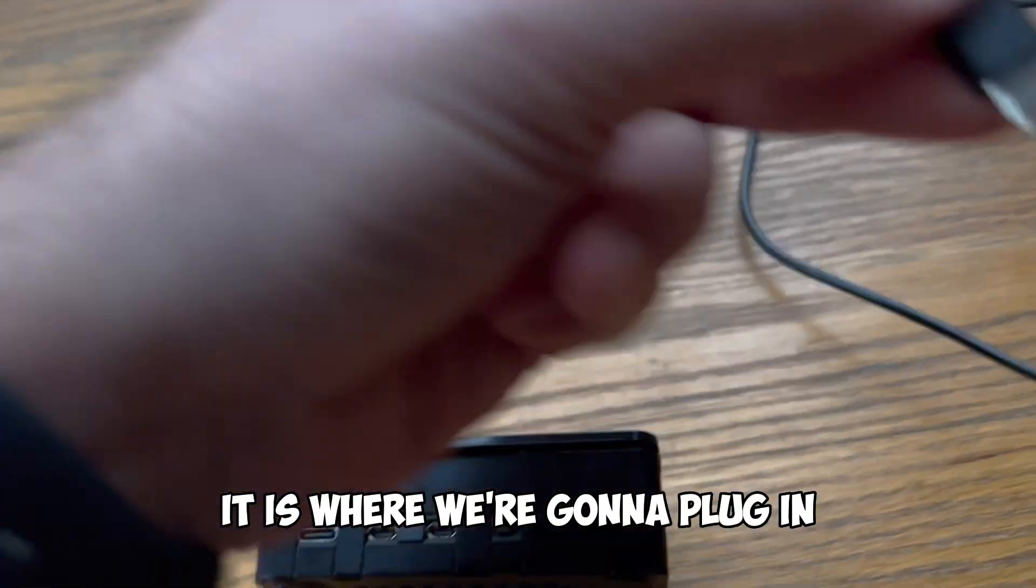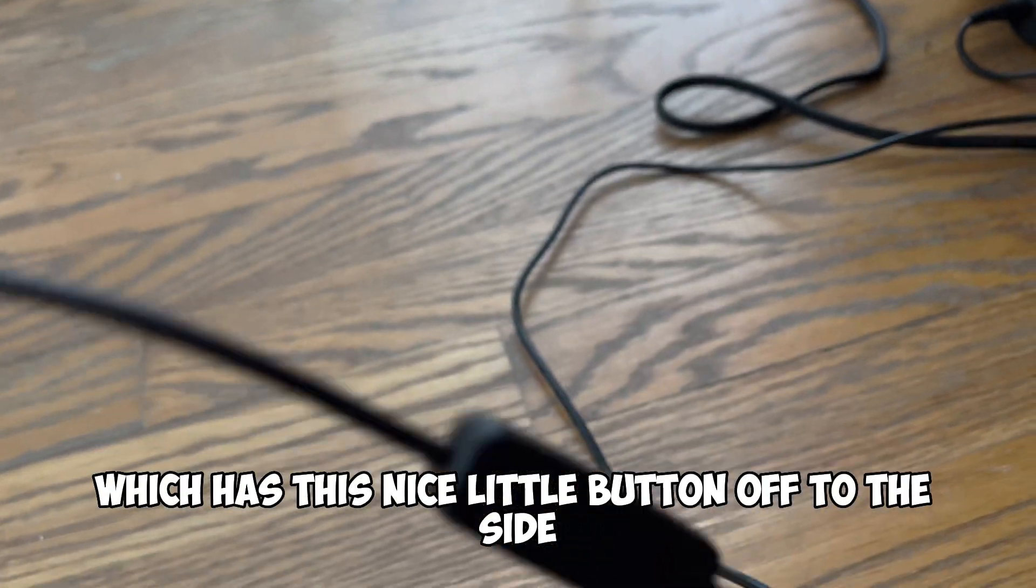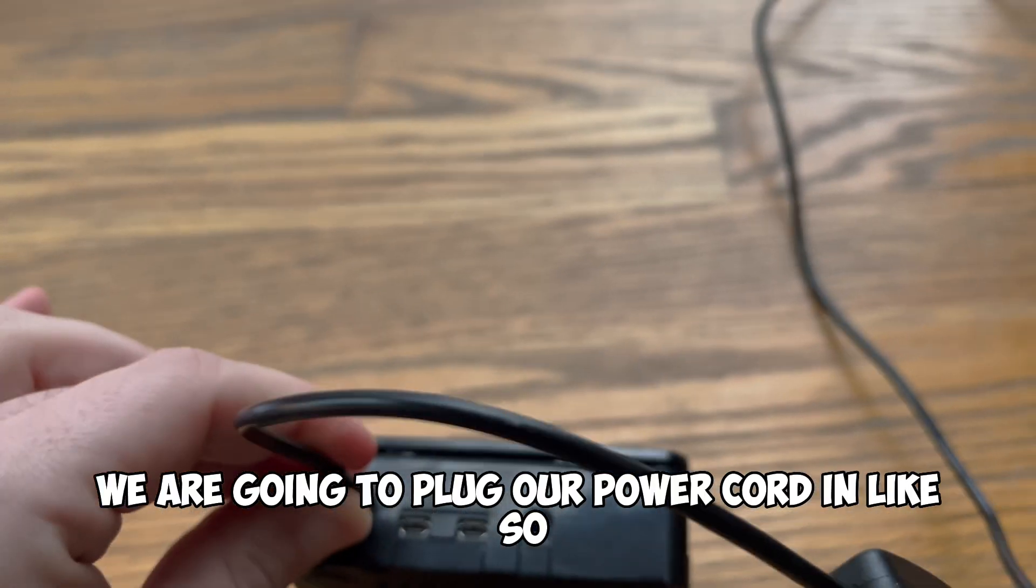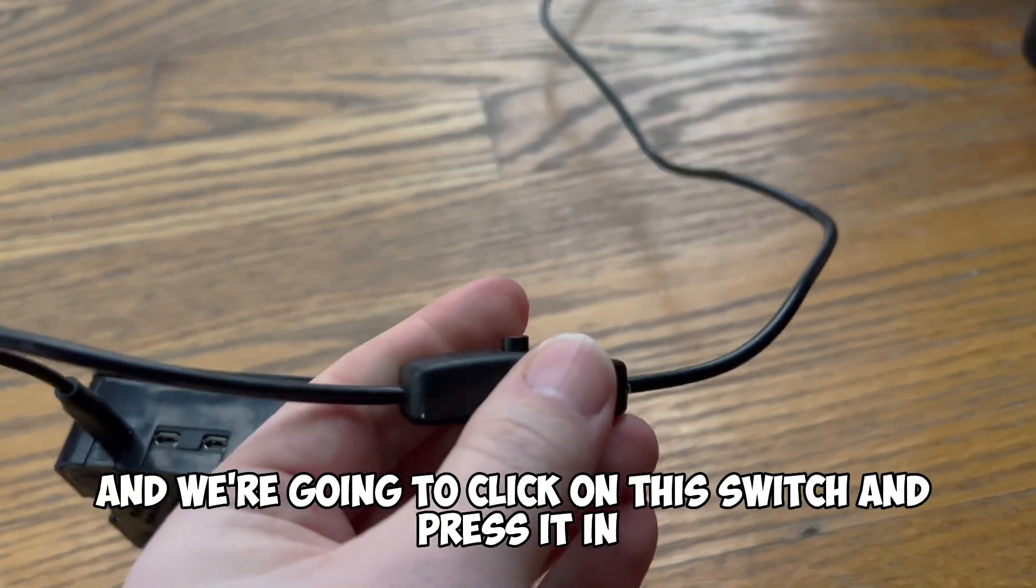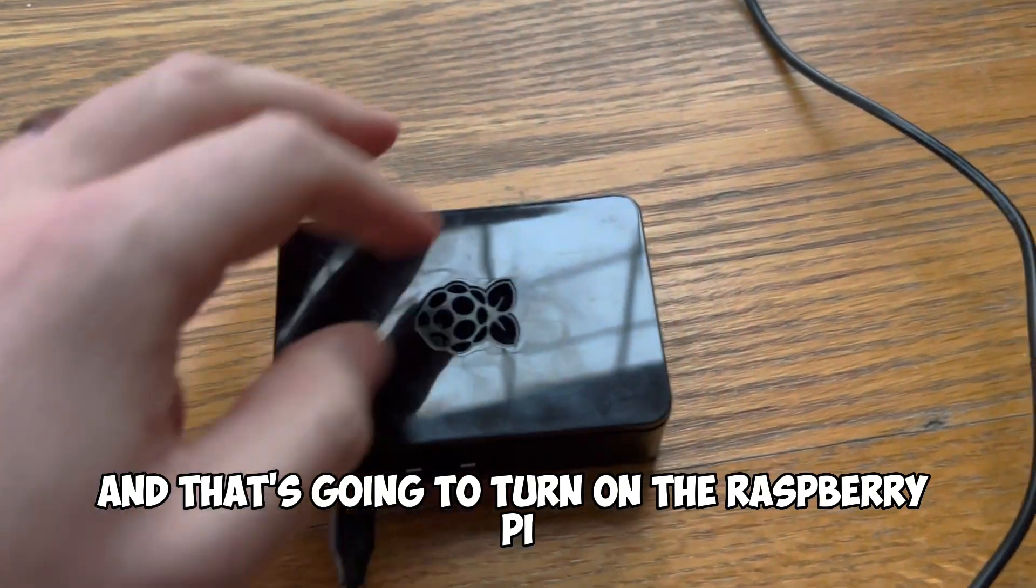It is where we're going to plug in off the side of the computer our power cord over here which has this nice little button off to the side. We are going to plug our power cord in like so and we're going to click on this switch and press it in and that's going to turn on the Raspberry Pi.